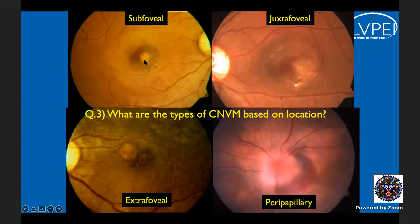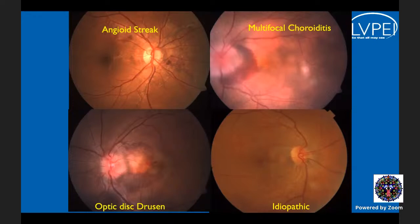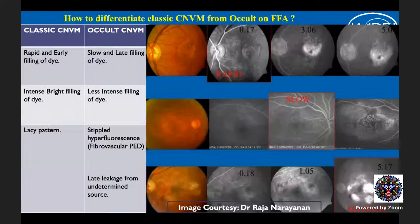CNVM can also be classified by location: subfoveal, meaning under the fovea; juxtafoveal, which is 1 to 199 microns from the center of the fovea; extrafoveal, where the CNVM is 200 microns or more from the foveal center; and peripapillary CNVM, which is around the optic disc. Causes of peripapillary CNVM include angioid streaks, inflammatory conditions like multifocal choroiditis, optic disc drusen, idiopathic intracranial hypertension, or idiopathic causes.